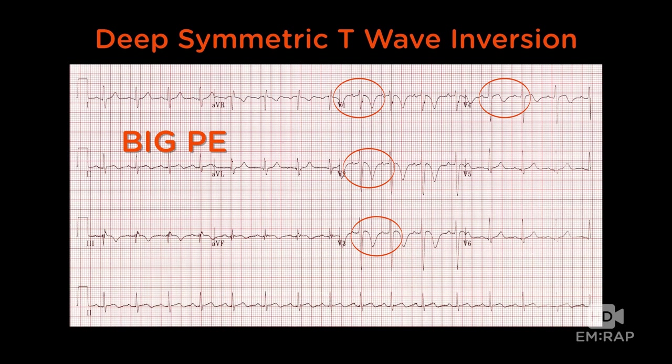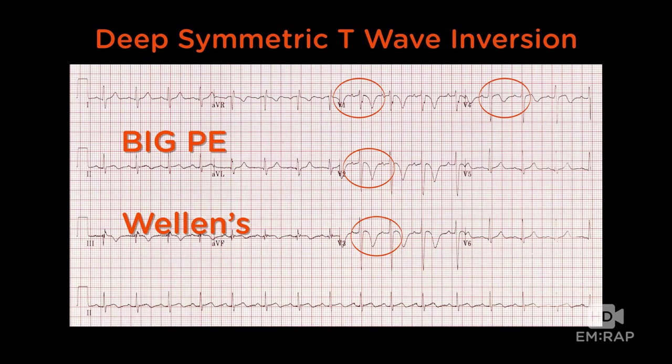You also have acute ischemic Wellens syndrome, which is the acute ischemic syndrome that sometimes looks like that when the patient is at rest without pain. It's when they have pain and the T-waves flip and look normal-ish that you think, 'Hey, this must be an acute coronary syndrome' — dynamic changes depending on whether they have chest pain. And if this person comes in unconscious with dilated pupils, you may think about subarachnoid hemorrhage, which causes dramatic T-wave inversions — the so-called deep symmetric cerebral T-waves.